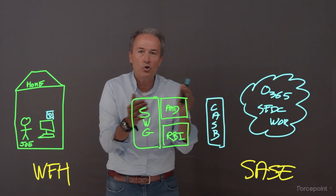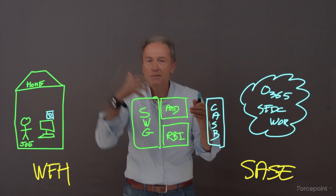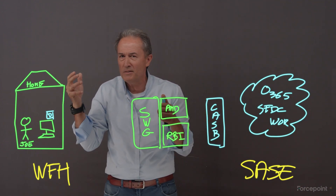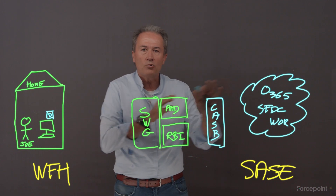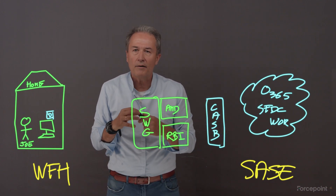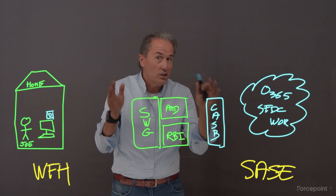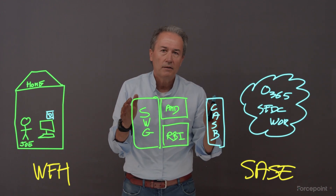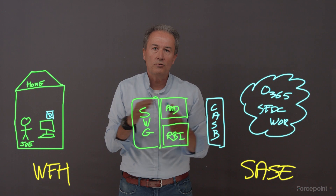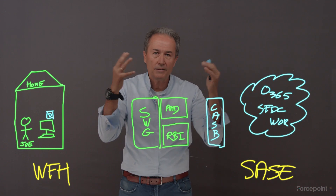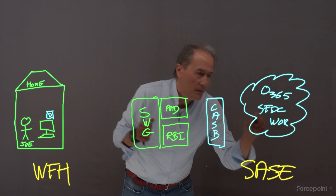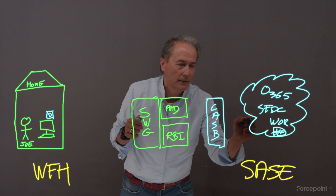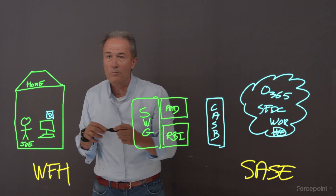For example, we can control whether Joe can share a file with a specific domain. If we don't recognize that external domain, we don't want him sharing corporate data with it. We can actually go one step further. Once Joe is connected to the application in the cloud, he's going to download confidential data and try to bring that data home — which is normal, he wants to work from home.